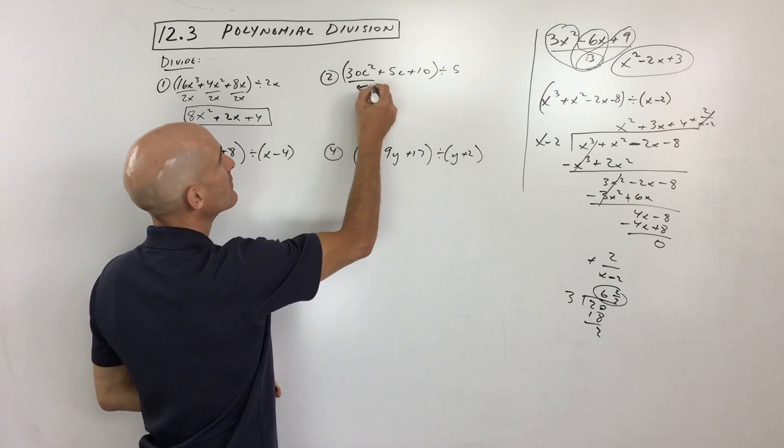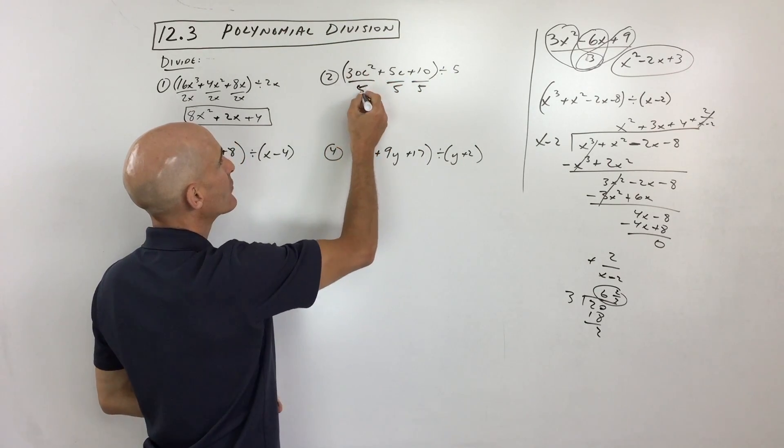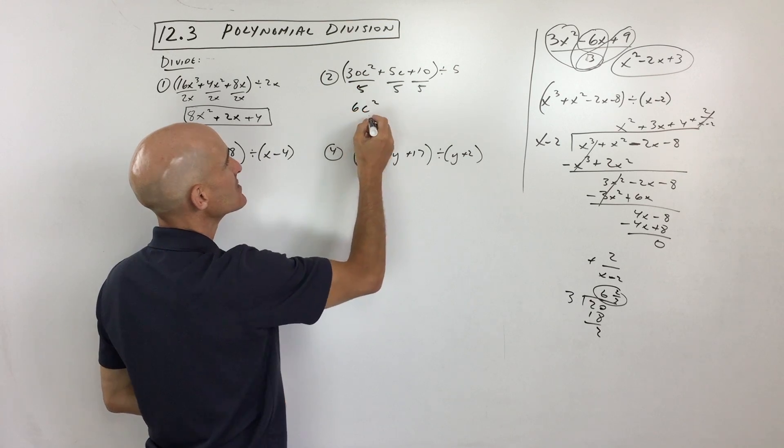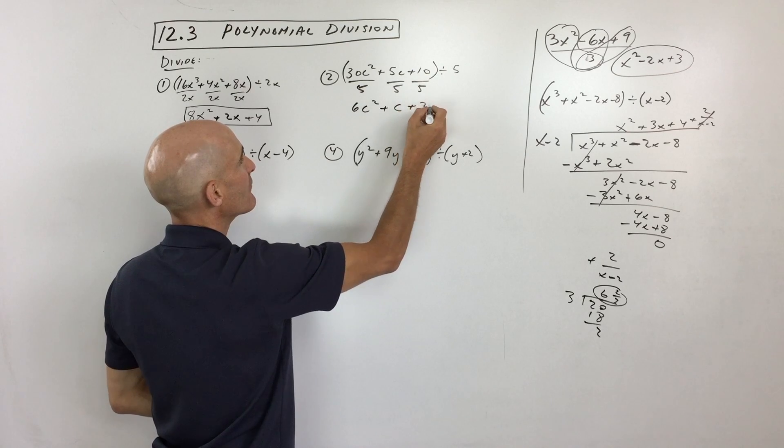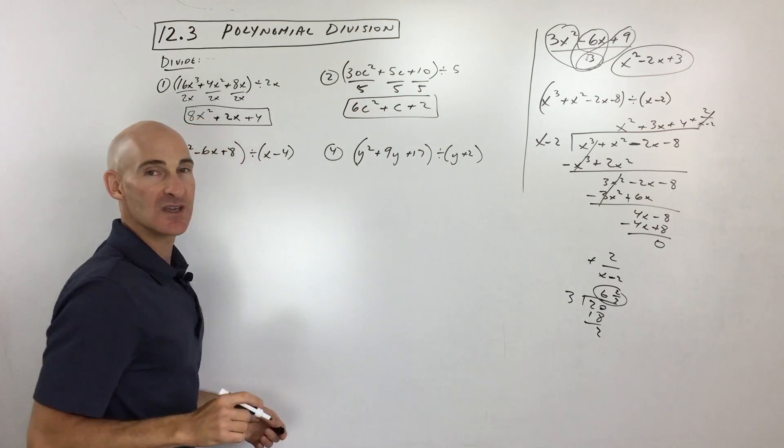You're dividing by 5. So everything gets divided by 5. 30 divided by 5 is 6 c squared. Here the 5's cancel. You can just get 1c. 10 divided by 5 is 2. So pretty easy, right?